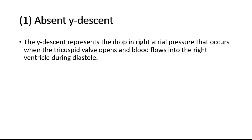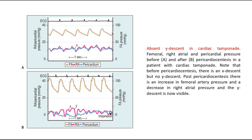First, for absent Y-descent. The Y-descent represents the drop in right atrial pressure that occurs when the tricuspid valve opens and blood flows into the right ventricle during diastole. This is a picture showing absent Y-descent in cardiac tamponade. Picture A and B show the femoral, right atrial, and pericardial pressure before and after pericardiocentesis in a patient with cardiac tamponade.